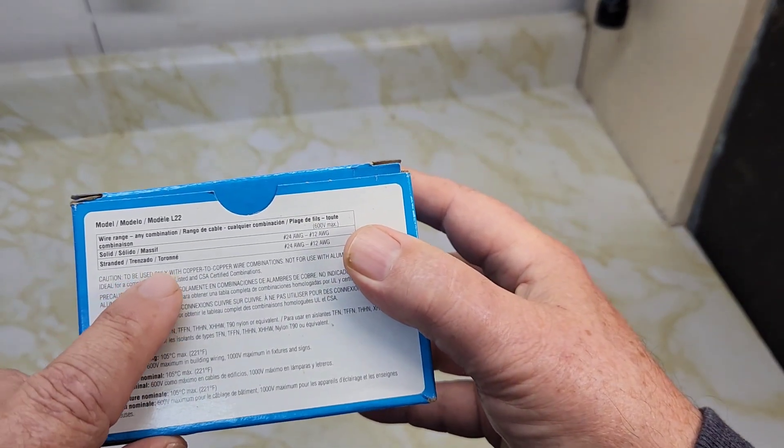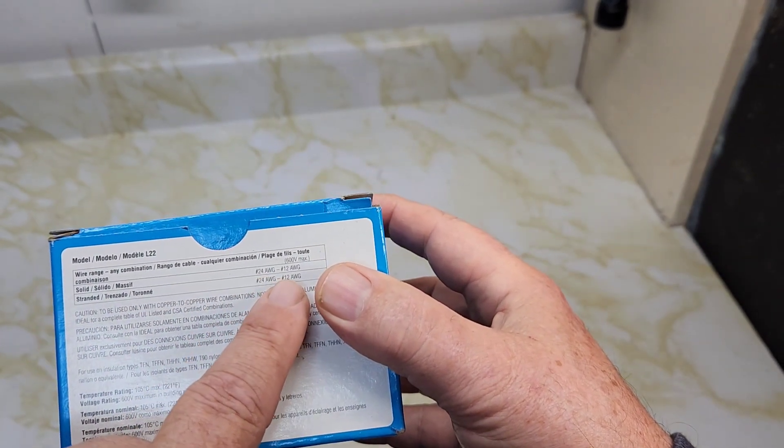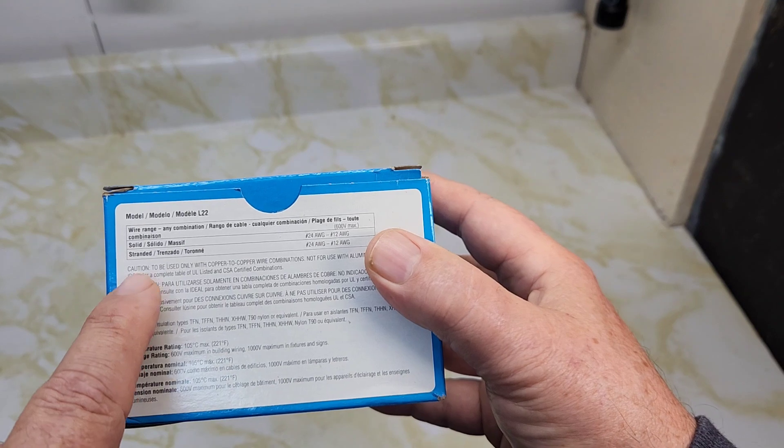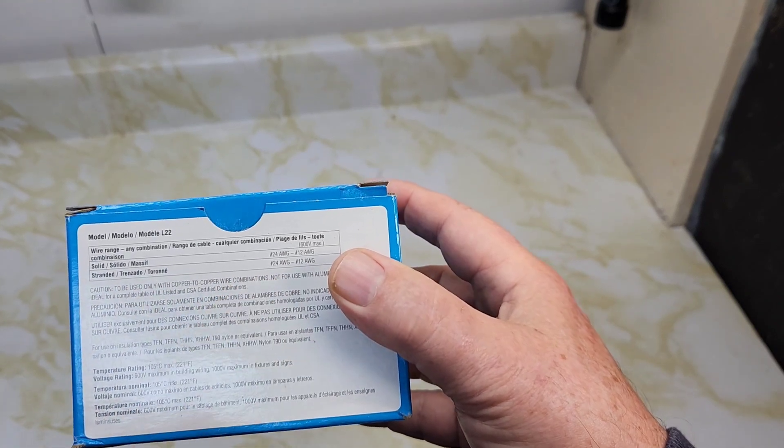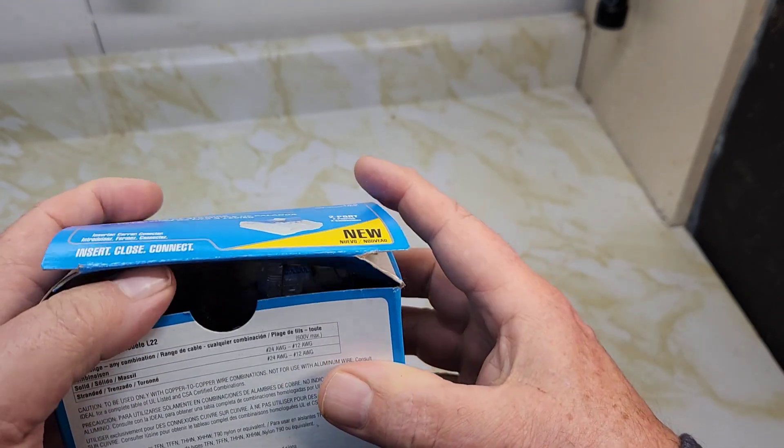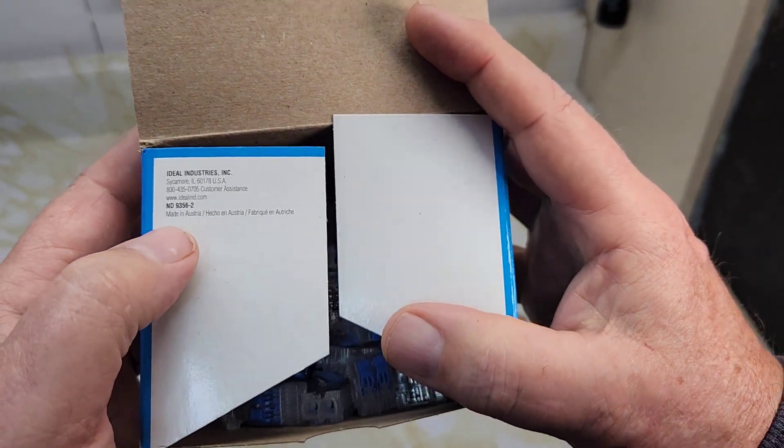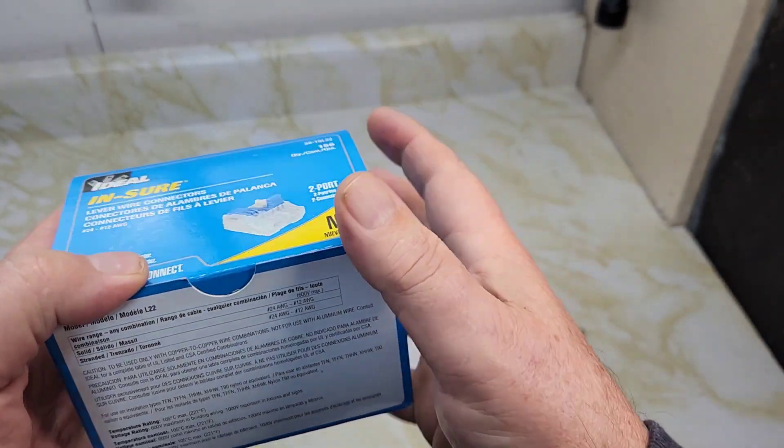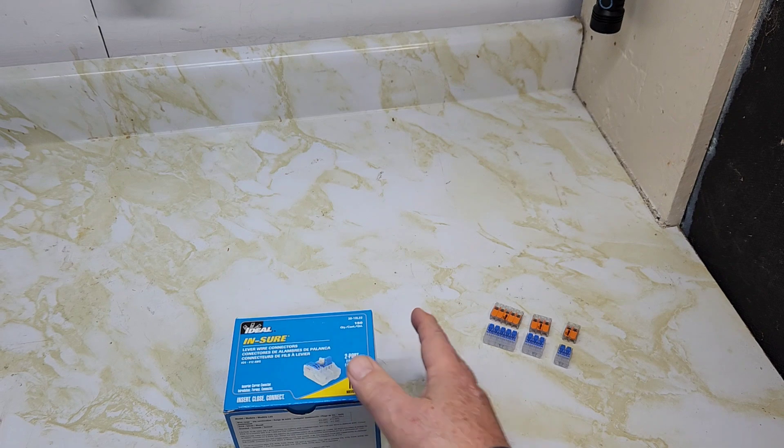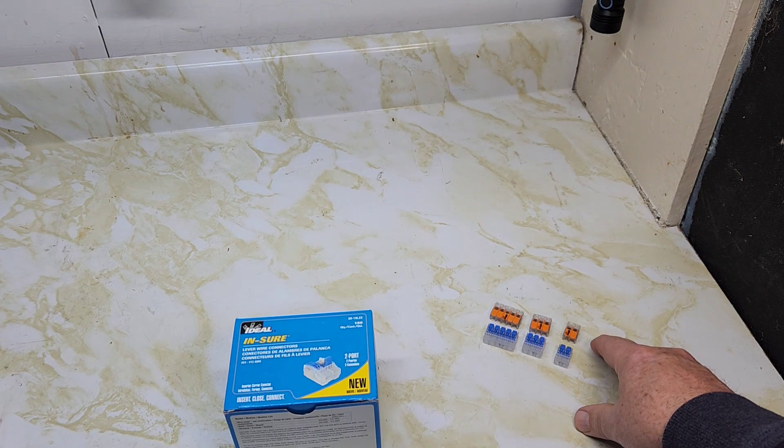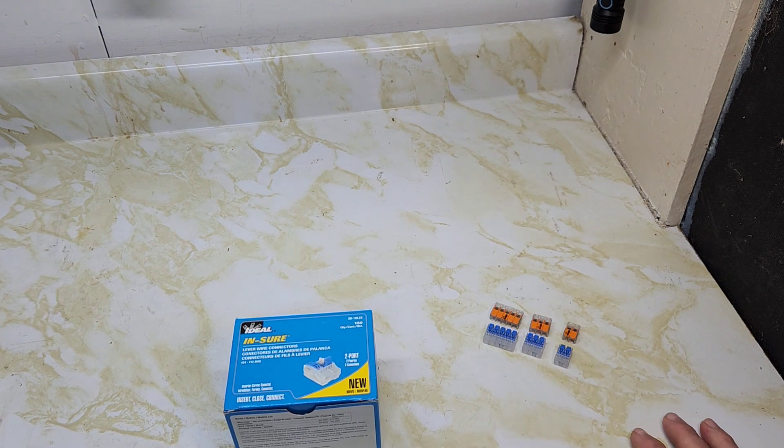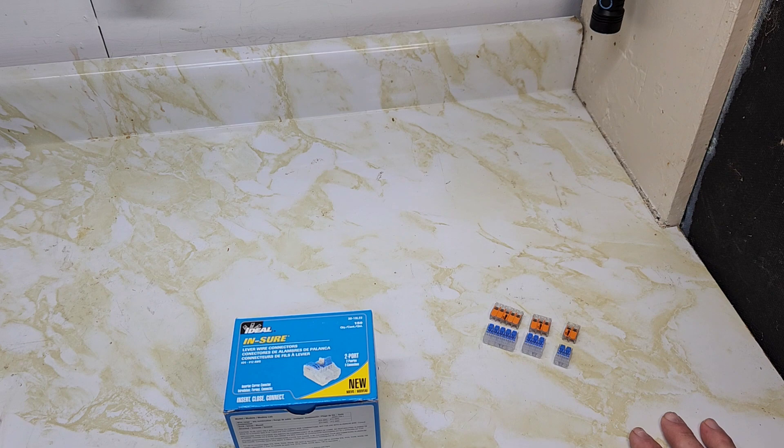You can look at these in the back. It says 24 to 12 AWG solid wire and 12 to 24 AWG stranded wire, and it's made in Austria. So we'll look at these two port, three port, and five port. We're going to compare them to the two, three, and five port Wago connectors. What's the difference? Which one should you choose?